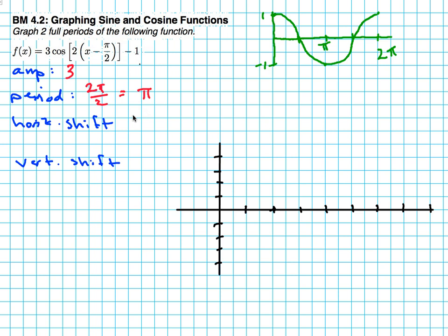Horizontal shift is what makes the parentheses 0. So my parentheses, x minus π over 2, it's going to make that 0. I'll add π over 2, so I get x equals π over 2. That means I'm going to shift π over 2 units. And the vertical shift is negative 1, so I'm going to put negative 1. That means we're going to move down 1.